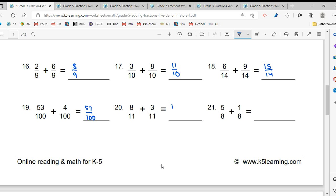And 11 upon 11 becomes what. Agar ooper or niche same number hai to? 1. Ooper or niche same number ho to kya ho jata hai? 1. Thik hai.